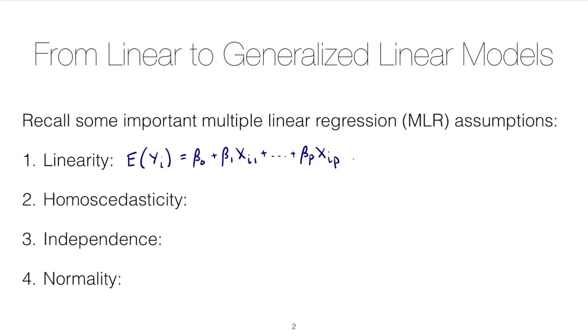And of course, if you wanted to write this more compactly, you could write that the expected value of the vector of all of those yi's is equal to the design matrix x times the parameter vector beta. All right, so that's the first assumption.